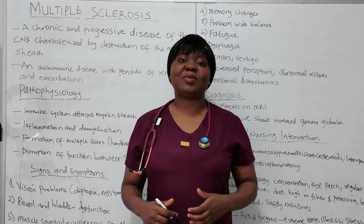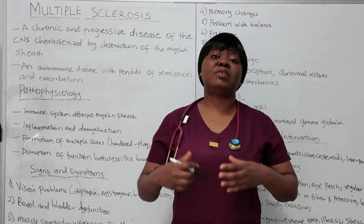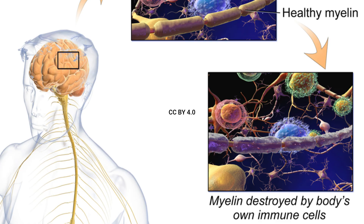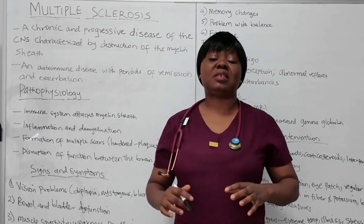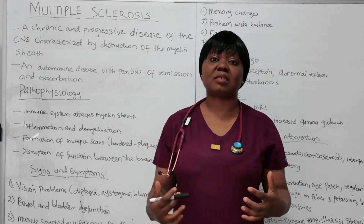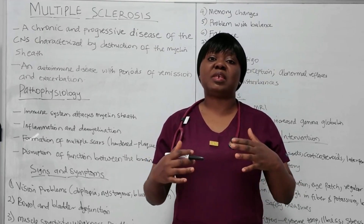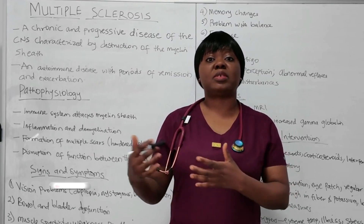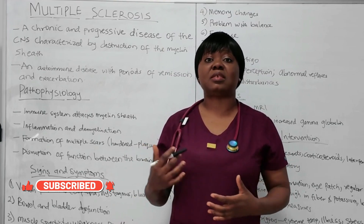Multiple sclerosis is a chronic and progressive disease of the central nervous system, characterized by the destruction of the myelin sheath. This myelin sheath is a protective covering of the axons, helping in proper transmission of impulses. This disease is an autoimmune disease, meaning the immune system attacks itself. It is characterized by a period of remission where the patient gets better, and a period of exacerbation or relapse where the situation worsens and the patient begins to manifest all the signs and symptoms.